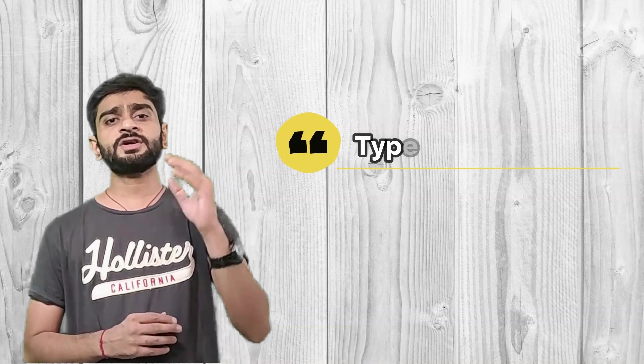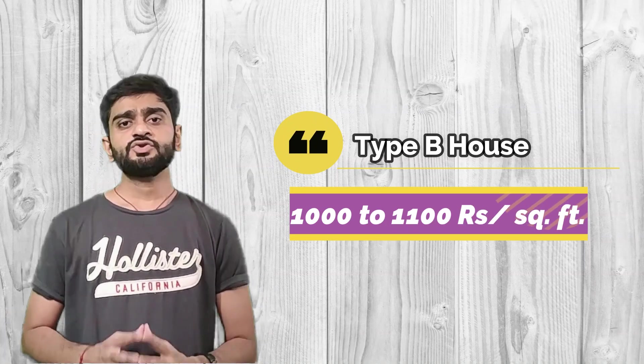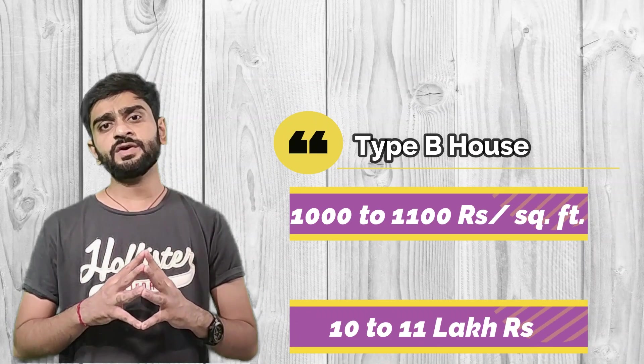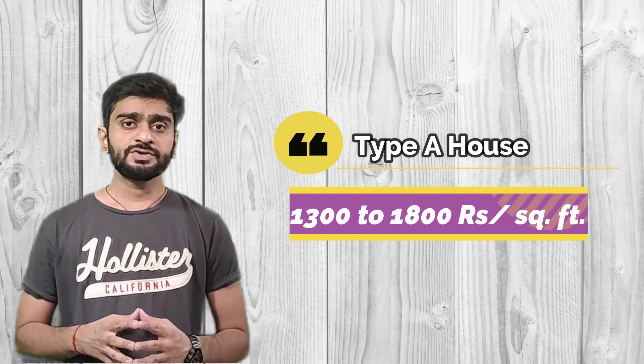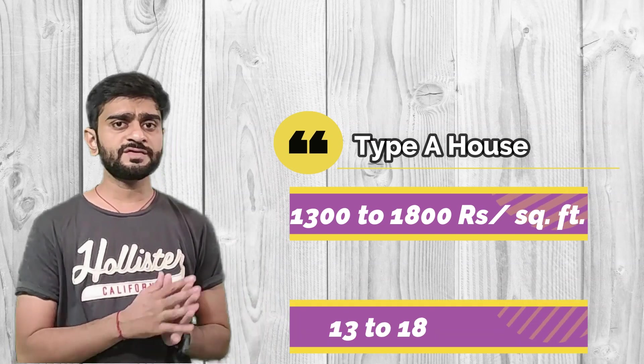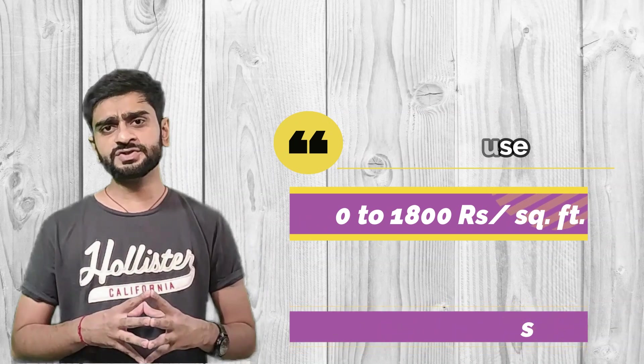Class C houses are load-bearing structures which do not have a structural frame containing beams and columns. For a Class B house, the total construction cost per square feet will be about 1000 to 1100 rupees, so the total for 1000 square feet will be 10 to 11 lakh. For a Class A house, the cost is 1300 to 1800 rupees per square feet, making the total 13 to 18 lakh. These structures generally have an earthquake-resistant frame with beams and columns.